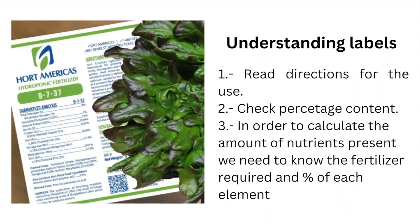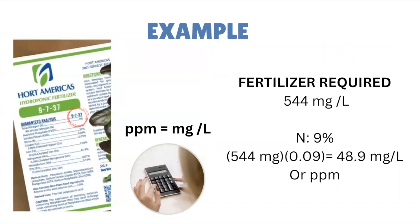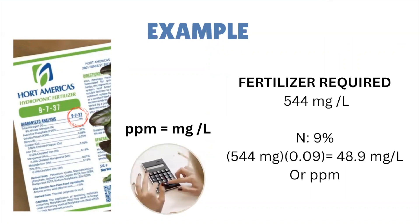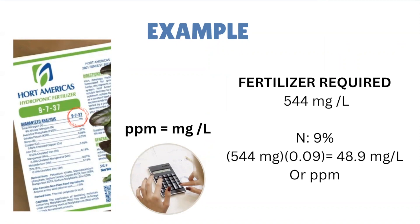Now we are going to calculate, using the percentage and the fertilizer instructions, the total PPM for each element, with the purpose of comparing with the recommended levels found in a reliable source. You will read the fertilizer instruction and, if necessary, make the conversion to milligrams per liter. Most fertilizers come with instructions in grams per liter or grams per gallon, so make sure to make the proper conversion before starting, because PPM equals milligrams per liter and we need to work with this unit.